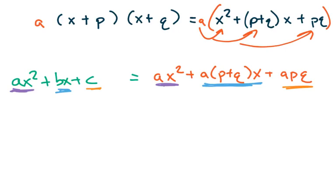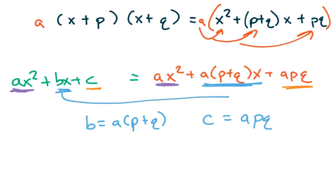And lastly, we'll see that apq matches up with c. So from this, we can say b is equal to a times p plus q, and then we can also say c is equal to apq. So hopefully that makes sense. All I'm doing here is matching these two together, and here we're matching these two together.